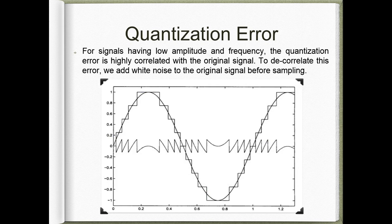Now, we can ignore the effect of quantization error for signals with high amplitude and frequency, but for those with low amplitude and low frequency, we observe that the QE is highly correlated with the original signal, as can be seen in the diagram. To decorrelate this error, we add white noise to the original signal before sampling. This is nothing but dithering.